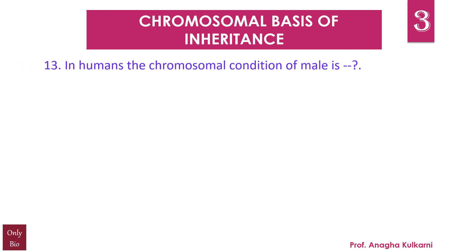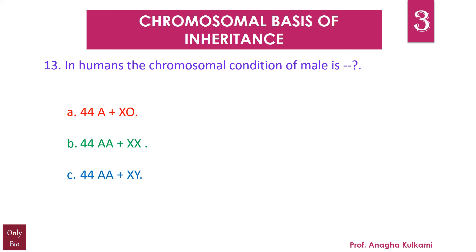Question number 13: In humans, the chromosomal condition of a male is — A) 44A + XO, B) 44A + XX, C) 44A + XY, D) 44A + XXY. The correct answer is C — 44 autosomes plus XY.